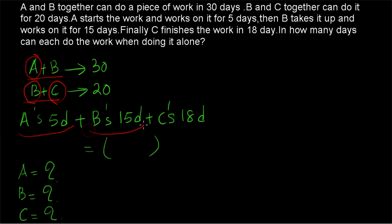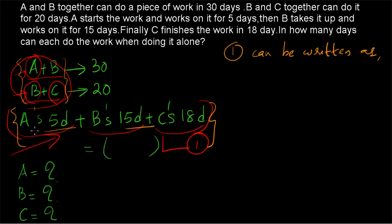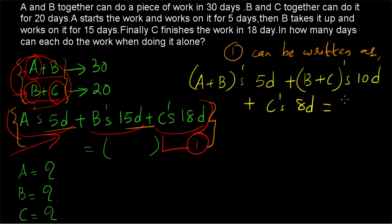A is working for 5 days, B is working for 15 days, and C is working for 18 days. Can we get the expressions A+B and B+C and use them in equation 1? Since A works 5 days and B works 15 days, we can write this as: (A+B) working for 5 days, plus B working for the remaining 10 days. Then we combine B's 10-day work with C's 18-day work to write it as (B+C) working for 10 days, plus C working for the remaining 8 days.